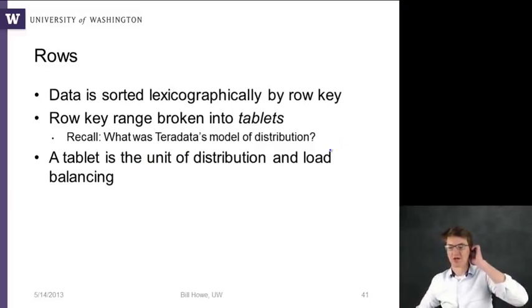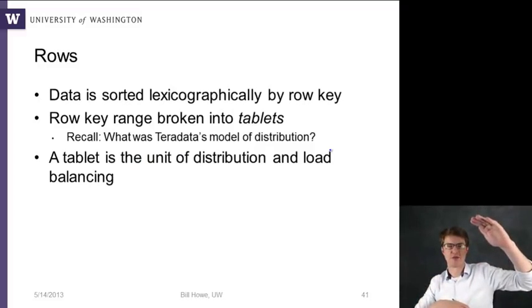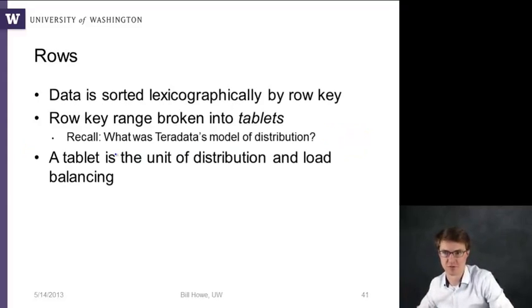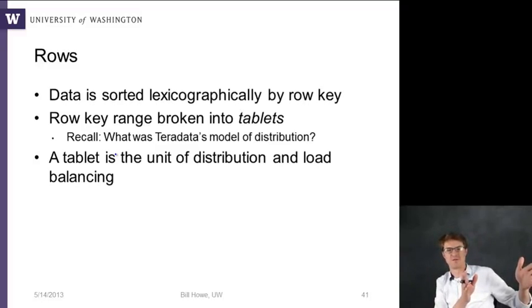So each row is, data is all sorted lexicographically by the row key, which is this row ID in this bit. So this is some sort of primary key in relational language or just a key in kind of a NoSQL framework. And then this key range, so they're integers. Then continuous sub-ranges of this set of keys will be assigned to a tablet.